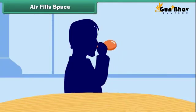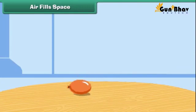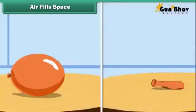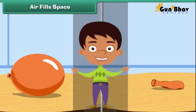Air fills space. Take a balloon and blow air into it. The balloon expands in size. Now prick the balloon with a pin. What do you see? The air inside the balloon escapes through the hole, and the balloon becomes flat. This proves that air fills space.